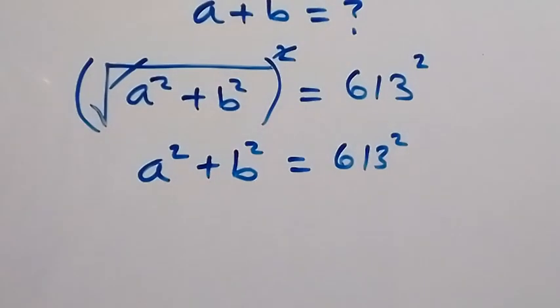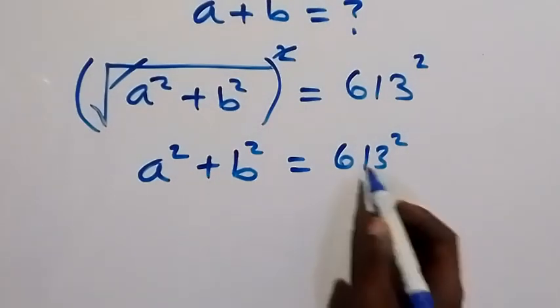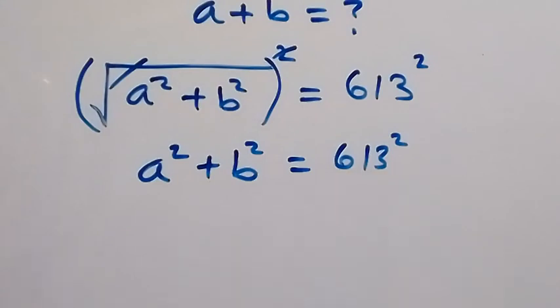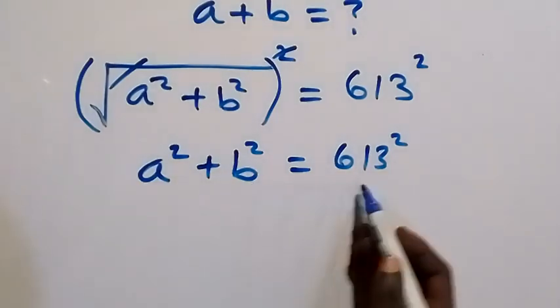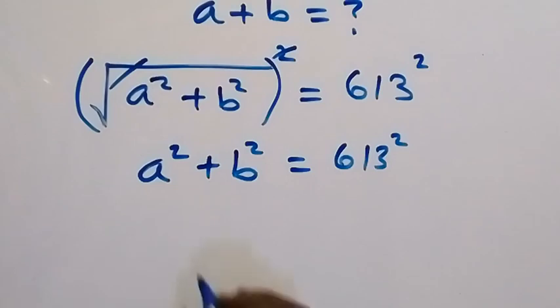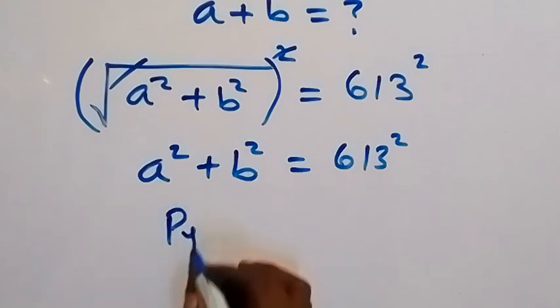Pythagoras' theorem, whereby we have 613 here as c. So we have a, we have b, then we have c. We have it in the form of Pythagoras' theorem.